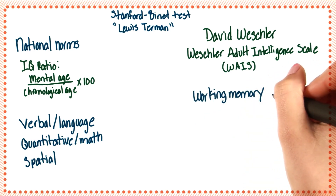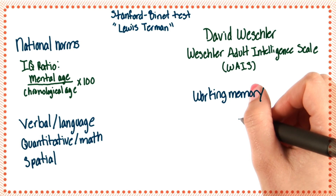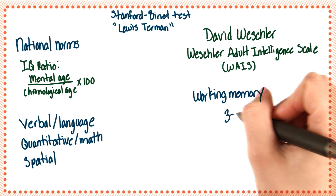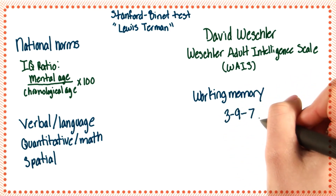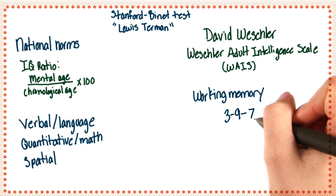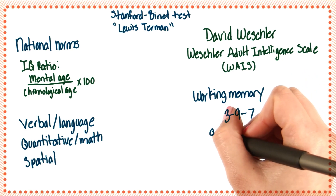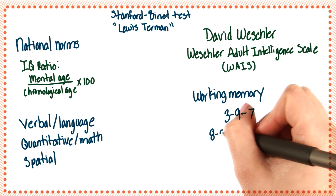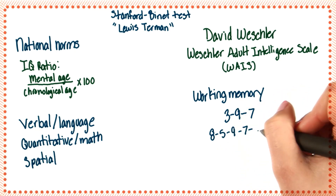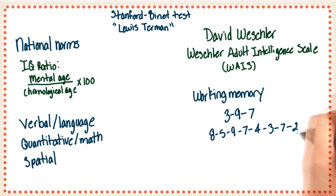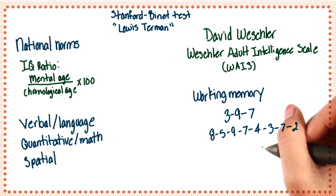Modern versions also test working memory, with problems such as the examiner saying a series of numbers — for example, 3, 9, and 7 — and then the person is asked to repeat them back. Or a longer sequence of 8 numbers: 8, 5, 9, 7, 4, 3, 7, 2 — and again, the person has to repeat these. The more numbers a person can recall, the greater their working memory is.